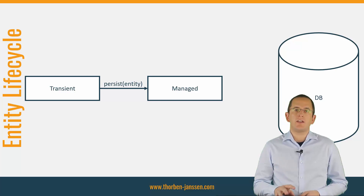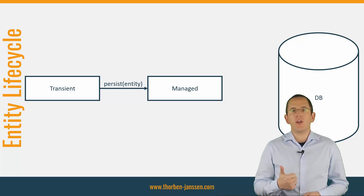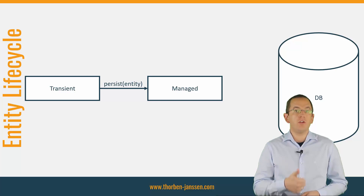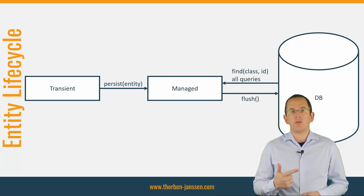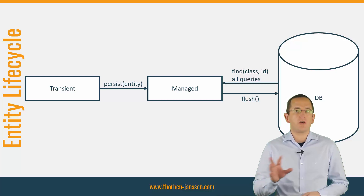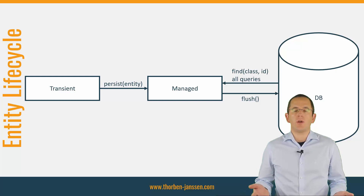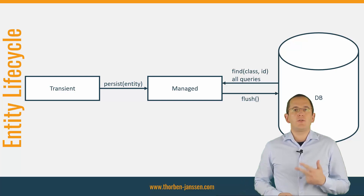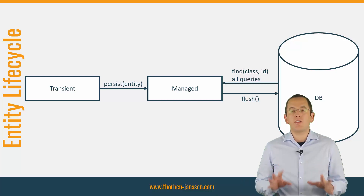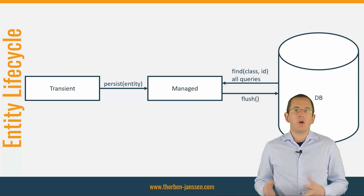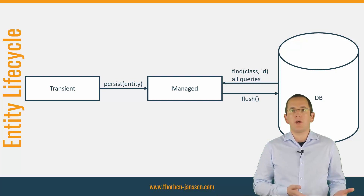There are different ways to get an entity to the lifecycle state managed. You can call the EntityManager's persist method with a new entity object. You can load an entity object from the database using the EntityManager's find method, a JPQL query, a Criteria query, or a native SQL query. You can also merge a detached entity by calling the EntityManager's merge method, or update it by calling the update method on your Hibernate session.